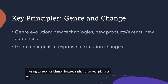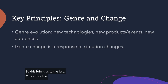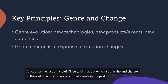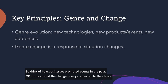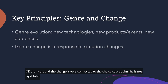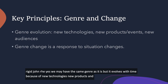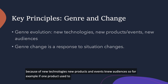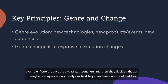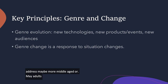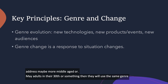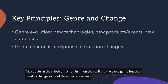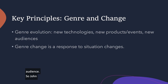This brings us to the last principle I'll be talking about: genre and change. Genre and change is very connected to choice, because genre is not rigid. We may have the same genre, but it evolves over time because of new technologies, new products and events, and new audiences. For example, if a product used to target teenagers and then the company decides that middle-aged adults in their 30s are a better target audience, they will use the same genre but need to change some of the expectations and conventions to suit the new audience. Genre change is a response to situation changes.